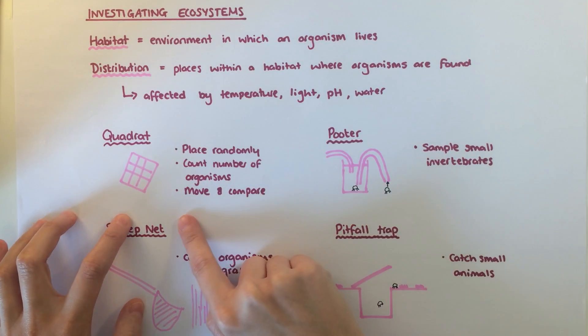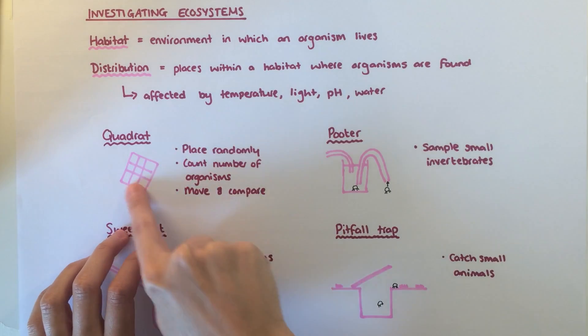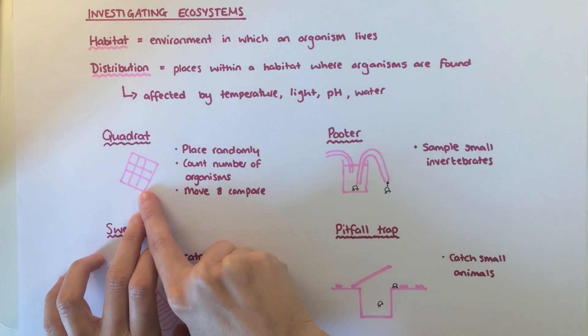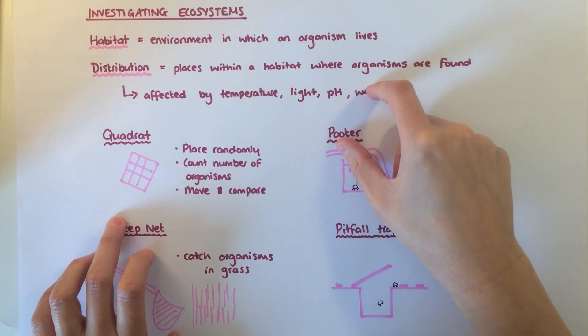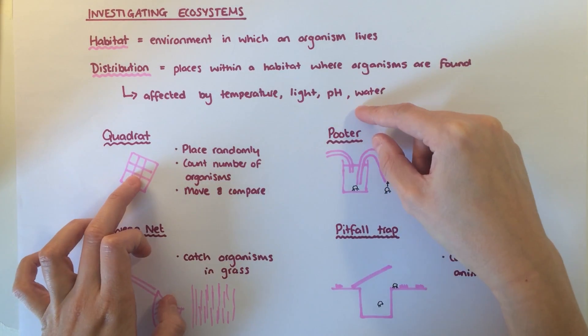Firstly, quadrats are square frames that you randomly place down on the ground, and you count the number of a particular organism found within it. You then move the quadrat to a different location and compare the findings between the two.